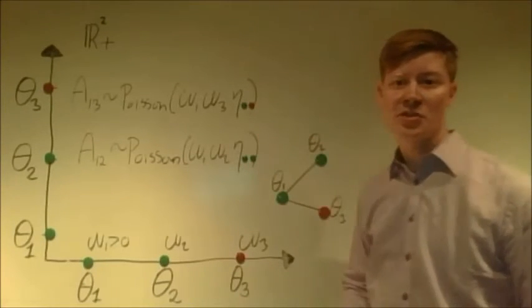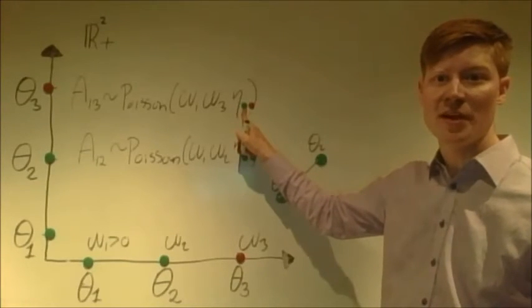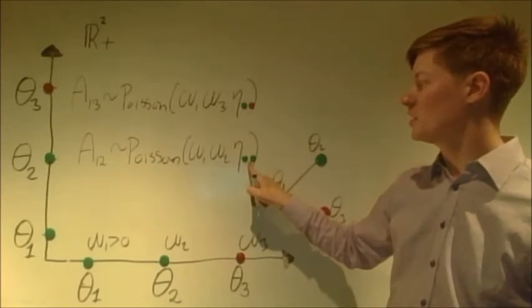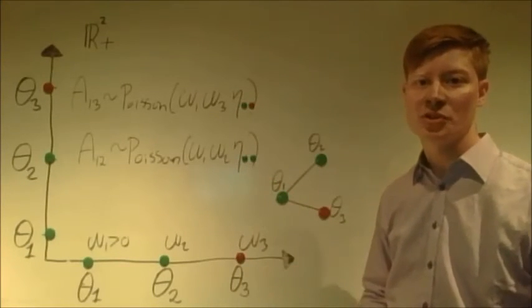Now, this allows us to model community structure because if we, for instance, assume that if the colors are different, the eta values are all zero, in the case that the same color, they are one, that would typically induce a community structure.